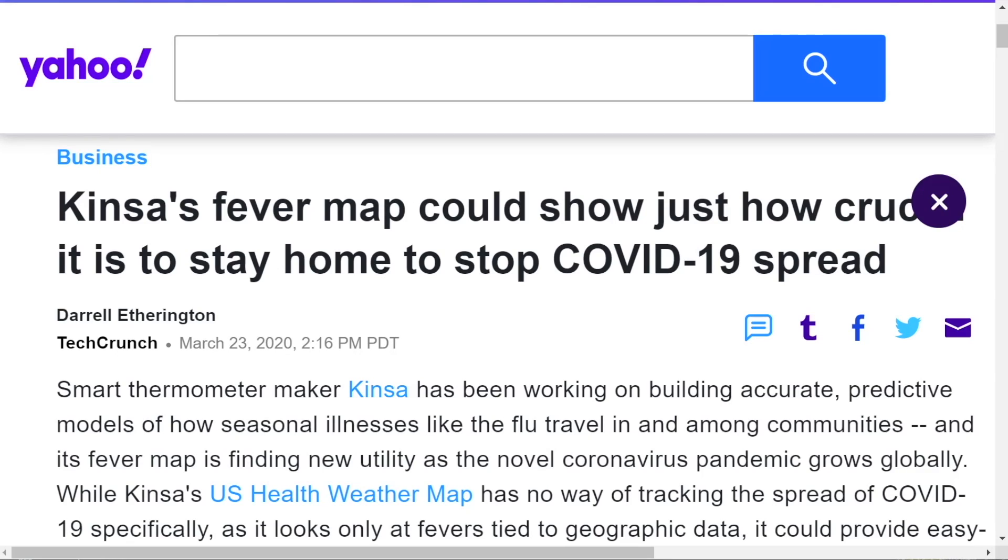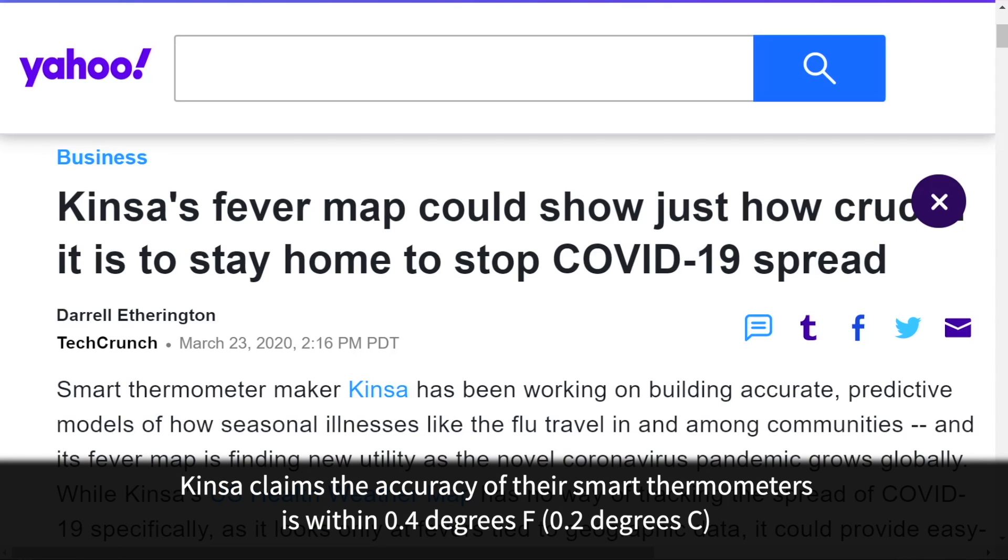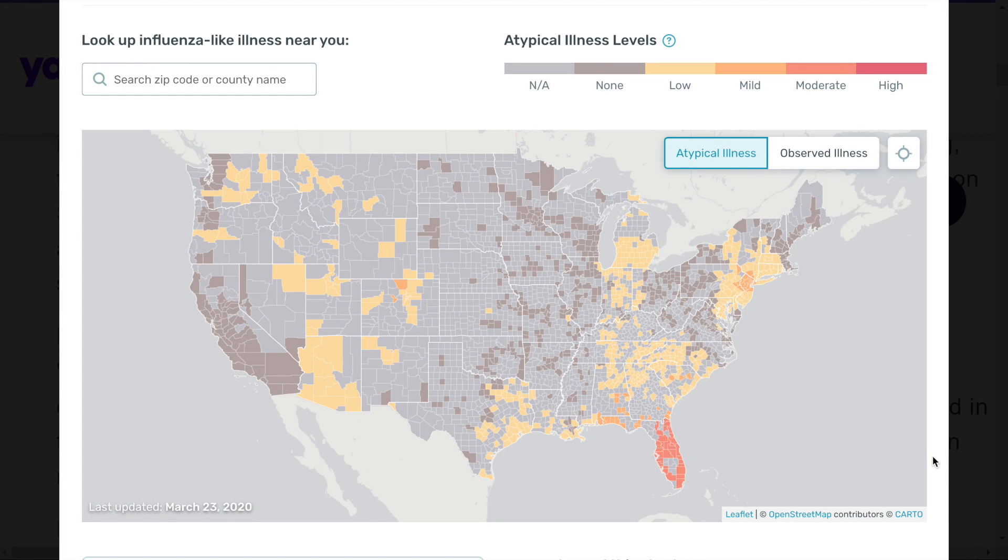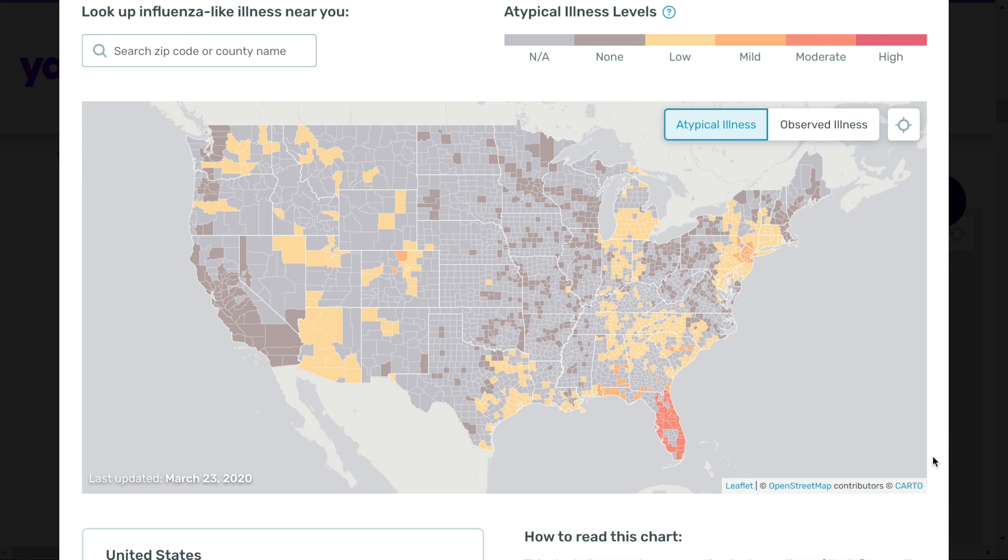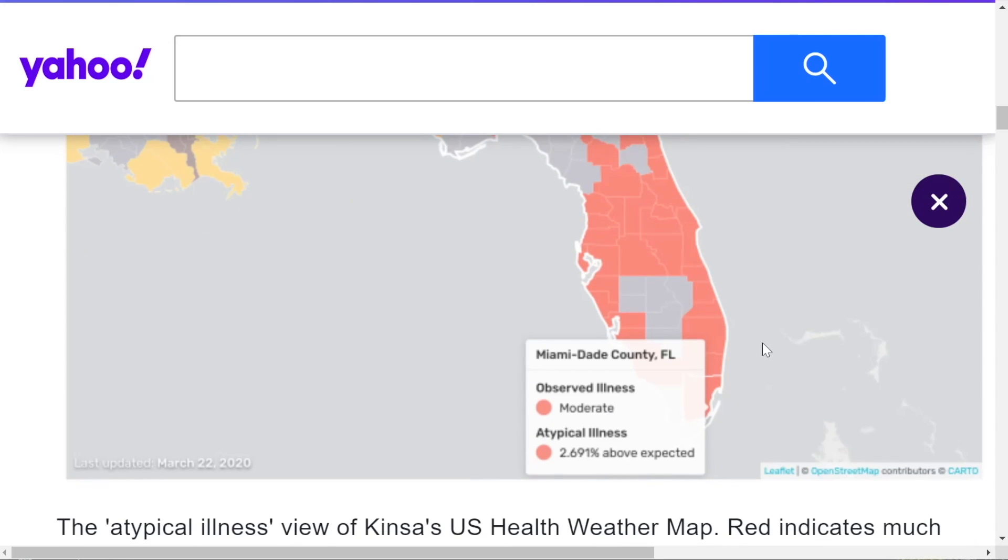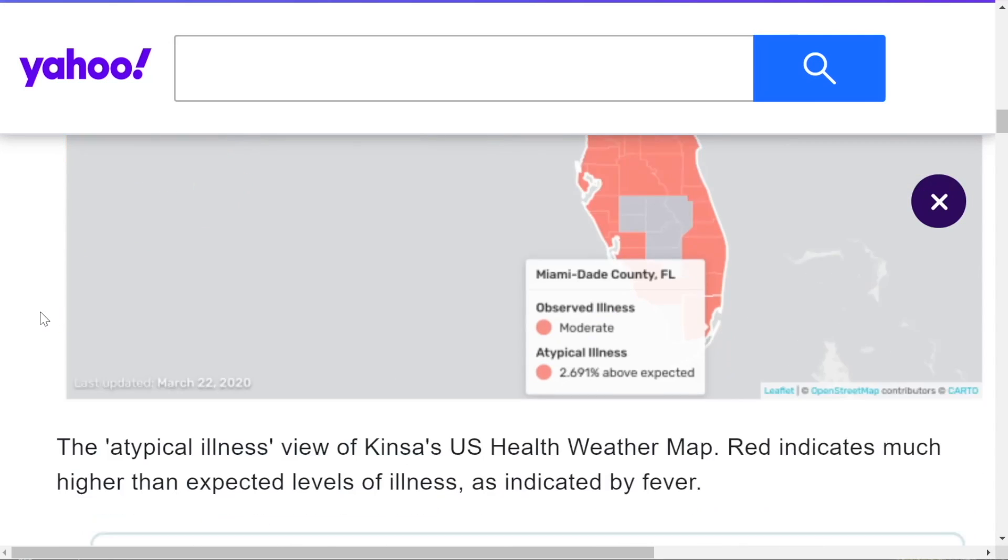Which brings me to this news that was on Yahoo. Fever Map could show just how crucial it is to stay home to stop COVID-19 spread. This is a smart thermometer made by Kinsa, which is able to upload the data from people who are taking their temperatures and put it on a map. And what they've shown here through this article, we'll put a link to it, is that in Florida there are a number of people who have had elevated temperatures more than they would have guessed for this time of year.